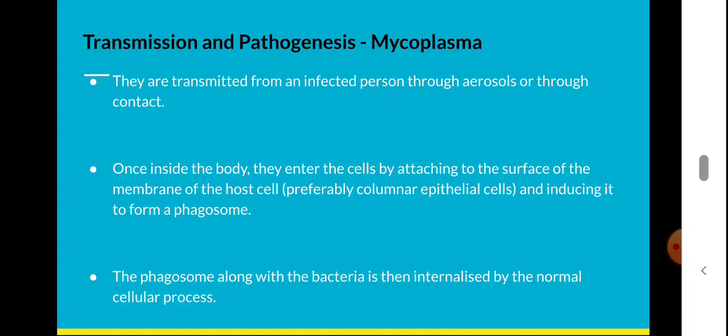After attaching to the host cell membrane, the host cell forms a phagosome. The bacteria is internalized and a phagosome is formed through the normal cellular process. Through this process, the mycoplasma enters into the host cell — first attaching, and then being internalized by the cell forming a phagosome.